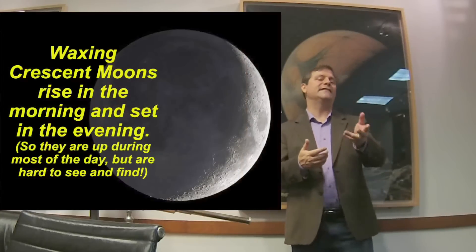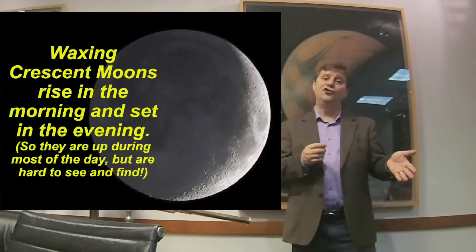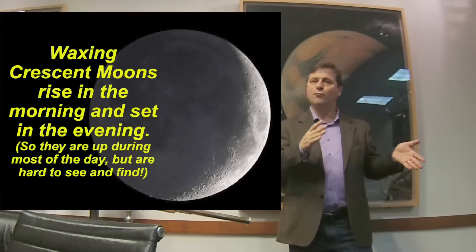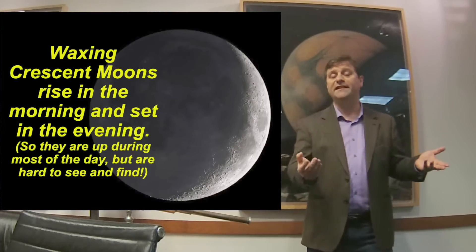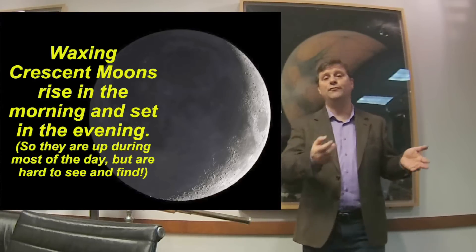People sometimes think the Moon is always up at night, but that's not always the case. The waxing crescent Moon rises just after sunrise, so it's up most of the day, but it's so close to the Sun that it's overwhelmed by sunlight. We can only see the waxing crescent Moon just after sunset, when it's low in the west. The horns of the Moon, when it's in crescent phase, point away from the Sun. The crescent Moon rises in the morning and sets in the early evening.